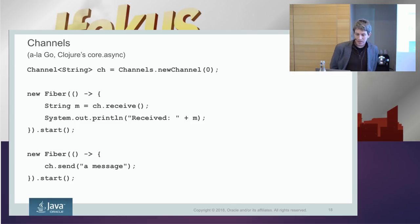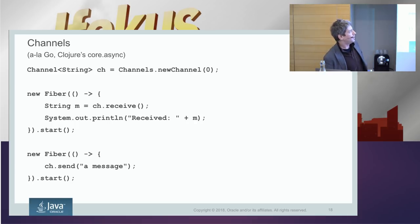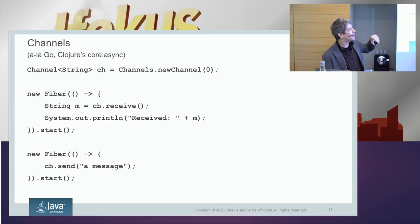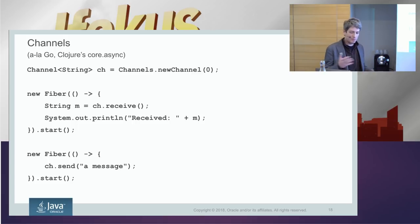Here's an example of channels — you receive from a channel (which blocks) and here you send one. Regardless of whether we reuse the Thread class for fibers or not, you'd be able to communicate from heavyweight threads and lightweight threads on the same channels and the same locks. So it's going to be quite agnostic.